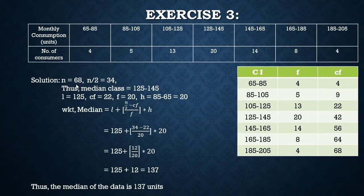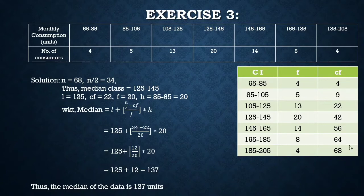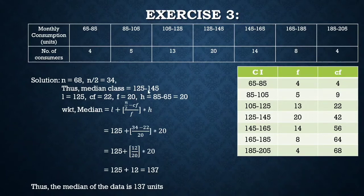We look for the cumulative frequency greater than but nearest to 34. The values greater than 34 are 42, 56, 64, 68 — the nearest is 42. The corresponding class interval 125–145 becomes our median class. So l = 125.